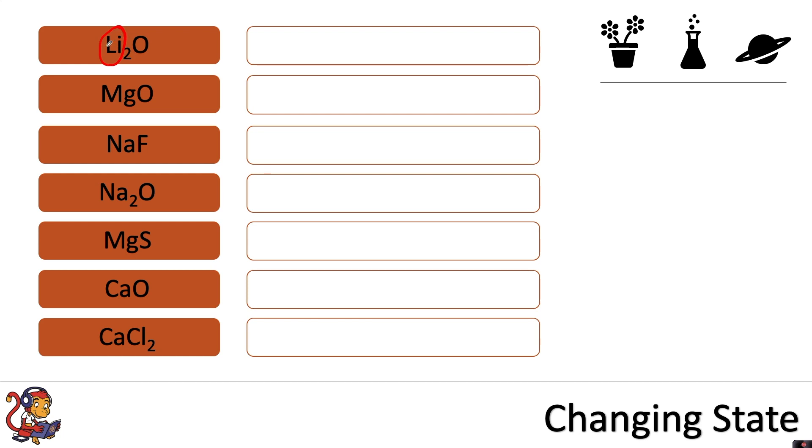In the first example, we're given Li and O. If we look on the periodic table, this stands for the elements lithium and oxygen. Ignore any numbers at this stage and just look at the letters. When lithium bonds with oxygen, it will make lithium oxide.